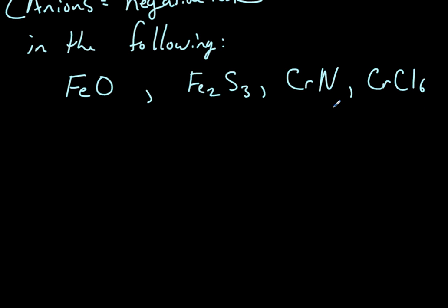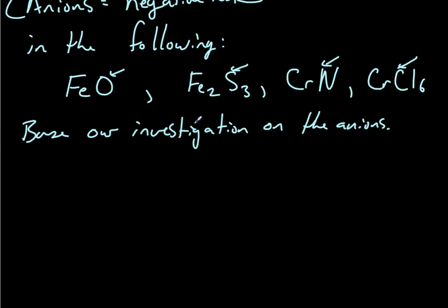So, here's a few examples. Let's find the charge on the cation in the following. We've got iron with oxygen as FeO. We've got Fe2S3. We've got CrN. And we've got CrCl6. And what you need to do is you need to figure out what is the charge on the cation in each of these situations. So, if I look here, the way that I'm going to tell is I'm going to have to look at the anion. Anions are nice in that they don't really change their ionic character. They're not like these guys. They don't flip-flop between two states. They're always the same thing. So, we're going to base our investigation on the anions.